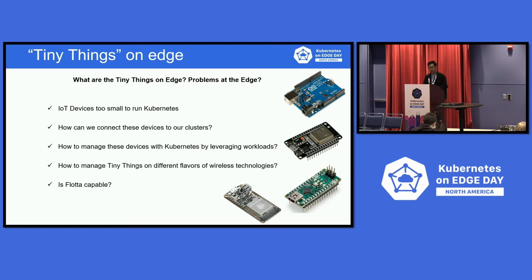However, we have a problem with tiny things on the edge. For example, we have Arduino and NodeMCU sensors. We call them tiny things because they are too small to run Kubernetes on edge due to resource constraints. Therefore, we have to figure out how we can connect and manage these devices to our cluster with Kubernetes, and how to manage tiny things across different varieties of communication protocols.